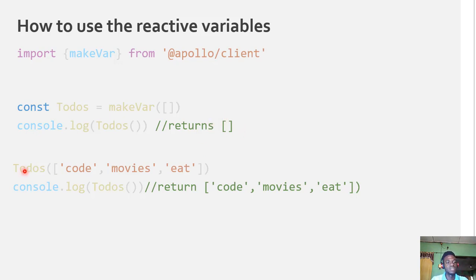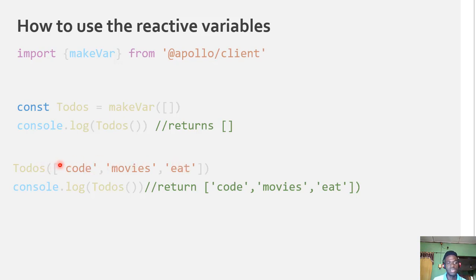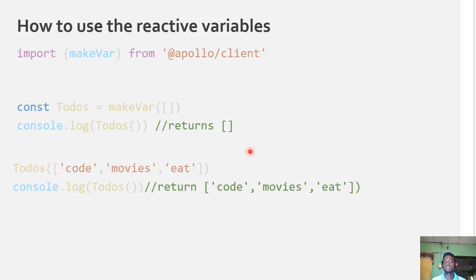Now to write new data to your to-do state, all you have to do is call your to-do variable and pass the data value as the argument. Here we're using an array as our state, writing it into our current state. If you want to see what your current state is, just log the to-do variable and you'll see it return the new array. It's quite simple — much more simplistic than using the Apollo cache for handling states locally.